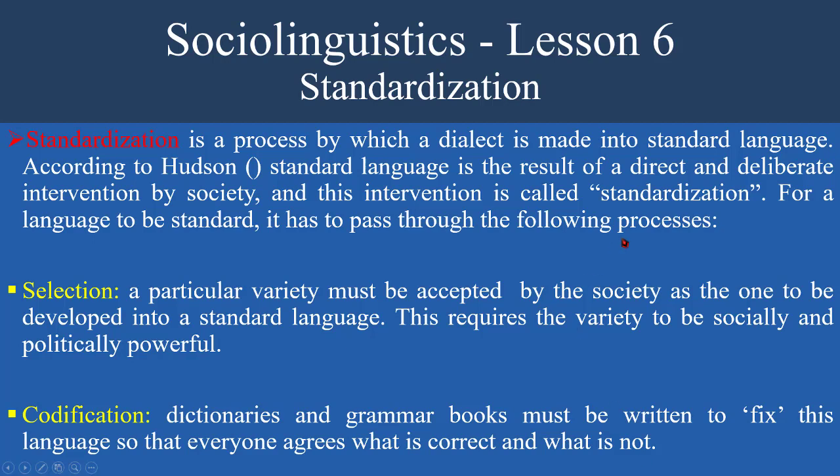The second process is called codification. Dictionaries and grammar books must be written to fix this language so that everyone agrees what is correct and what is not correct. To codify a language means you write dictionaries and grammar books and rules about the language so that people who speak it know what is wrong and what is right, and those who want to learn the language have rules to learn and acquire in order to speak the language.